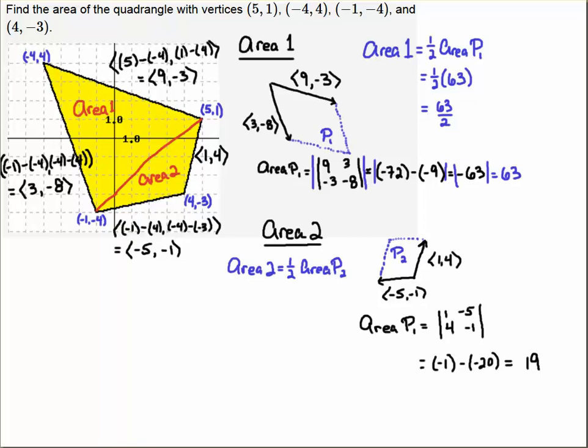I know I wrote down that it's P1, but it should be P2. I guess I was still held up by the previous problem there. Okay, now that we have that, the area of region 2, or Area 2, is half of P2, so I get half of 19, which is 19 over 2.